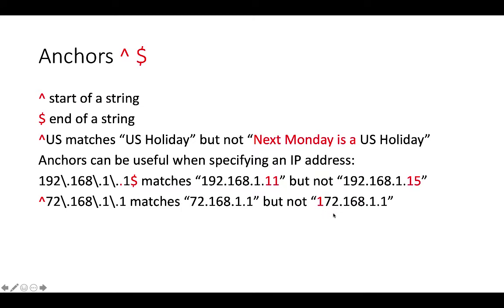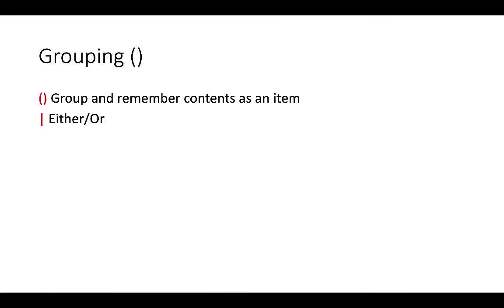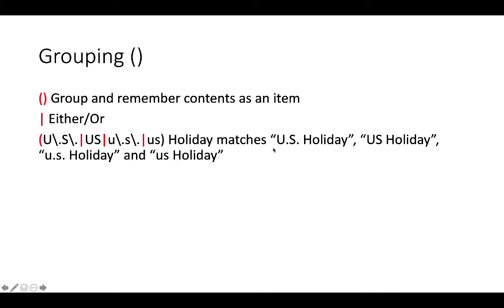Similarly, with a caret, '^72\.168\.1\.1' matches '72.168.1.1' but not '172.168.1.1', because the caret specifies nothing should come before. Parentheses group and remember contents as an item, and pipe (|) represents 'either/or'. This regex matches uppercase 'U.S.Holiday', uppercase 'US Holiday' without dots, lowercase 'u.s.holiday', and lowercase 'us holiday' without dots, because of the pipe giving four different cases.